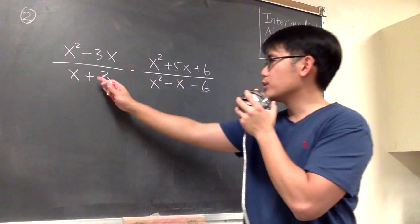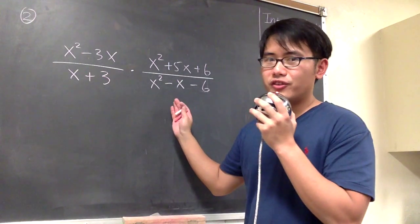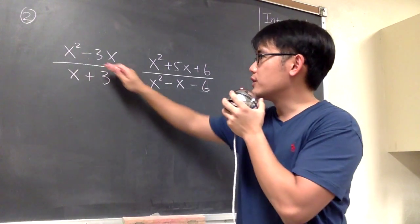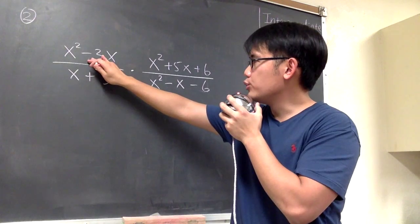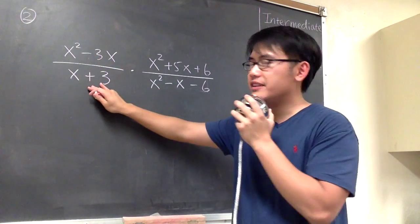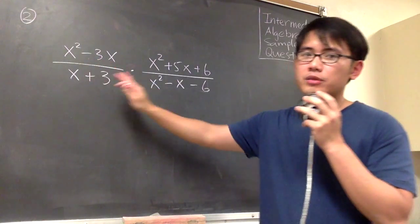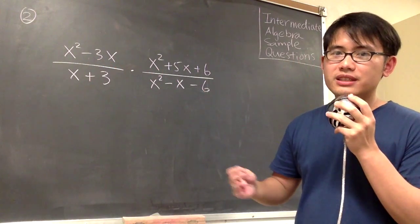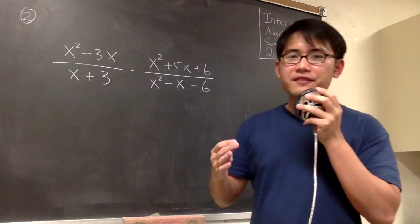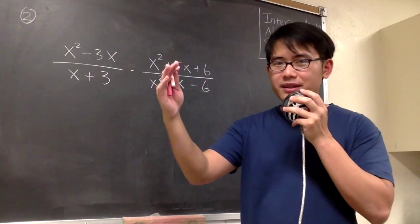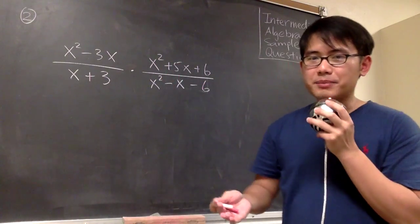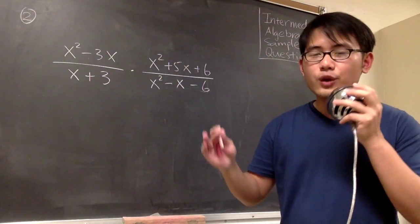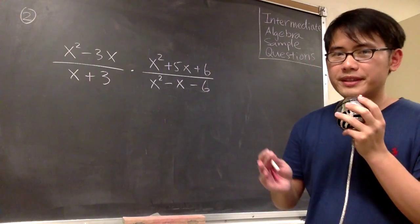For number two, we are going to multiply these two algebraic fractions. To do this, we'll first factor the numerators and the denominators of both fractions, and then we'll see if there's any factor that's the same on the top and on the bottom so that we can cancel them out. At the end, we'll just put all the remaining things together.